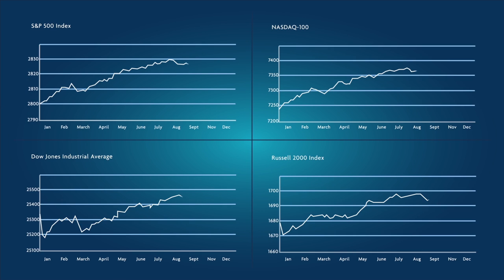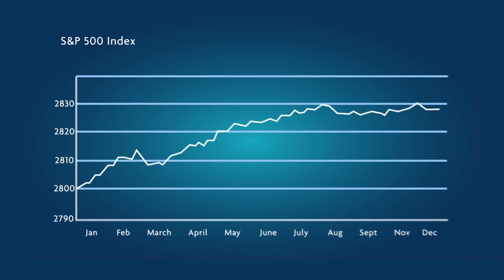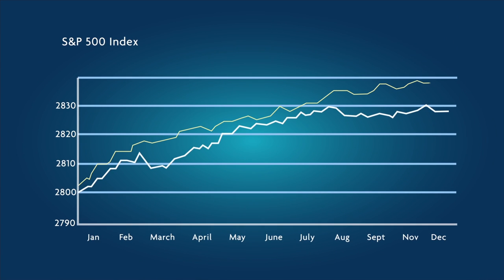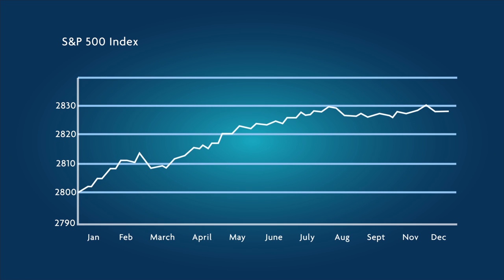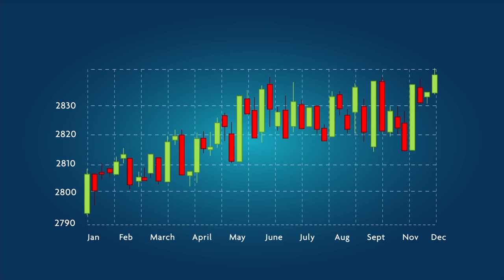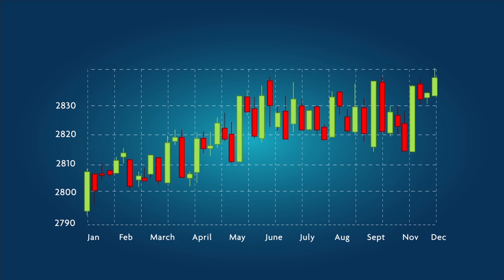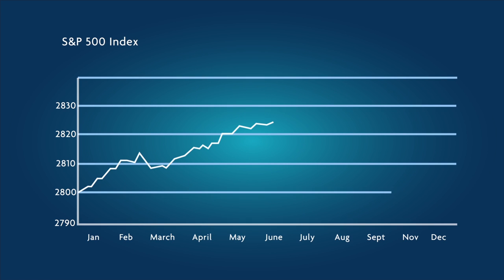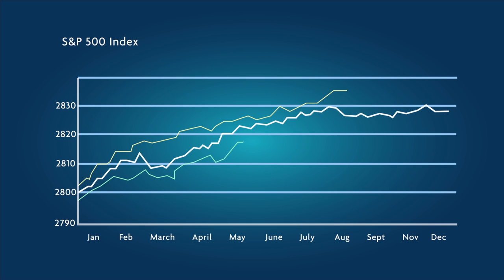Market performance is measured with market indices. Every index represents a different group of companies and is composed of different market sectors. Indices can be represented on a chart, and we observe the movement of the index by using Japanese candlestick charts. Every index in every sector has a different meaning.